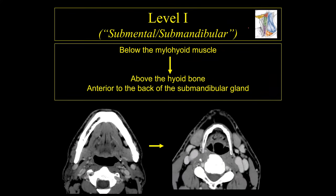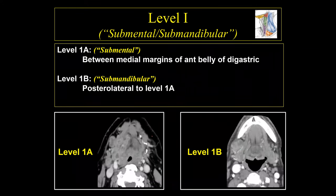The level 1 lymph nodes are located below the chin, sometimes referred to as the submental or submandibular lymph nodes, and they extend from the mylohyoid muscle down to the hyoid bone. If we draw a line connecting the back of the submandibular glands, everything anterior to the submandibular glands is level 1, and everything posterior to the submandibular gland is a different lymph node classification.